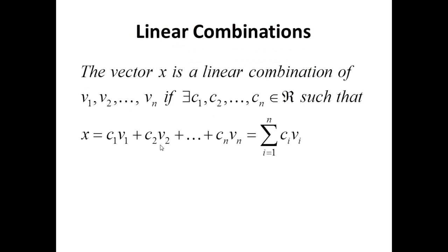Linear combinations. The vector X is a linear combination of vectors v1, v2, ..., vn if there exist scalars c1, c2, ..., cn such that X equals c1·v1 plus c2·v2 plus ... plus cn·vn, i.e., X equals the summation from i equals 1 to n of ci·vi.